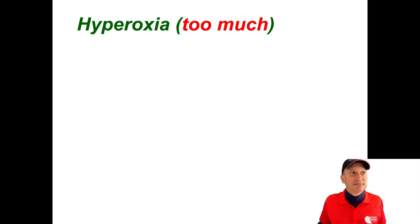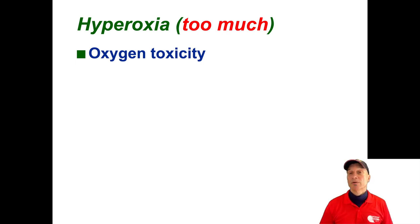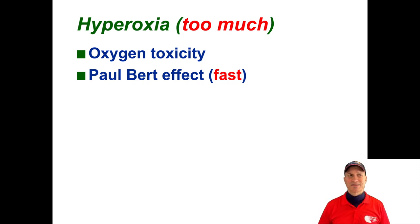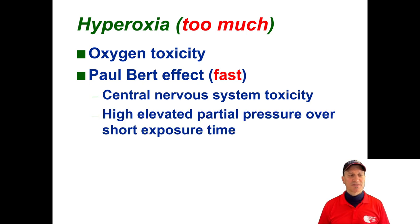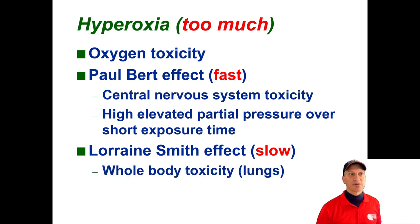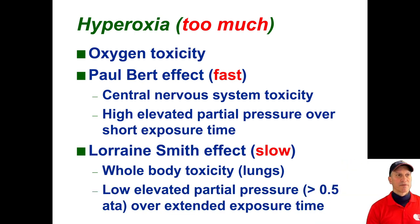Hyperoxia — too much oxygen. There are two potential problems. Problem one is the Paul Bert effect: CNS toxicity. It's fast — central nervous system toxicity from a high elevated partial pressure over a short period of time. Problem two is the Lorraine Smith effect: whole-body or lung toxicity — the slow one — from low elevated pressures over an extended period of time.